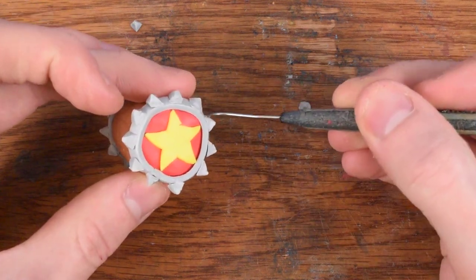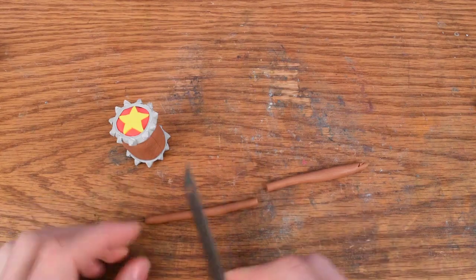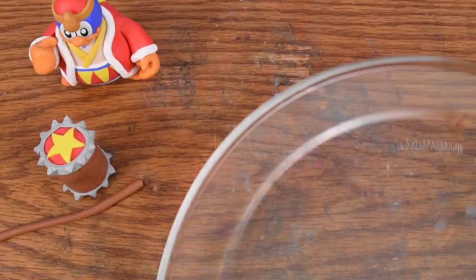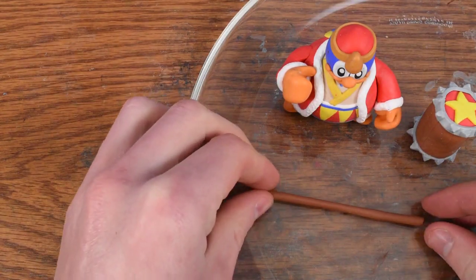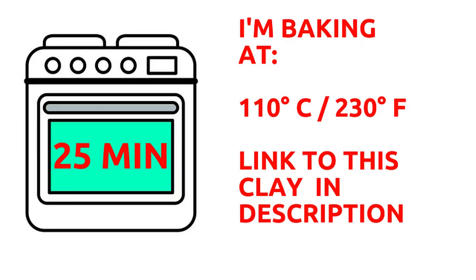And now on the other side. And now here we have the handle. I realize afterward I really should have put a wire in that. Anyway, here we go. King Dedede is ready to get baked.